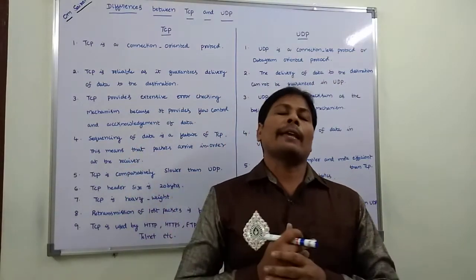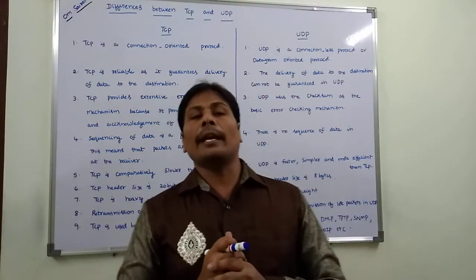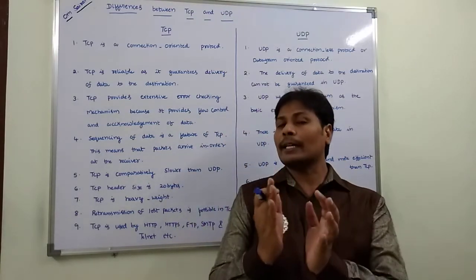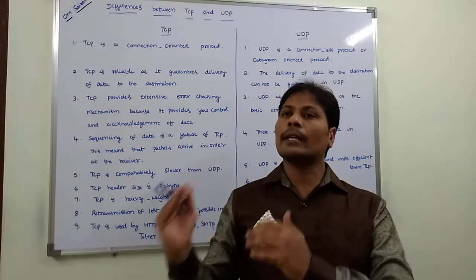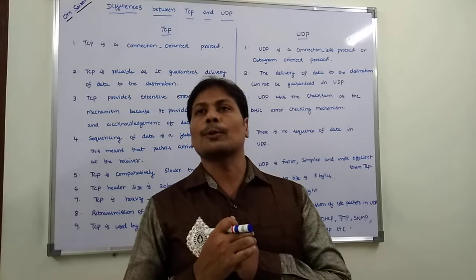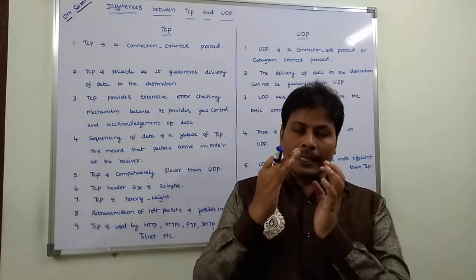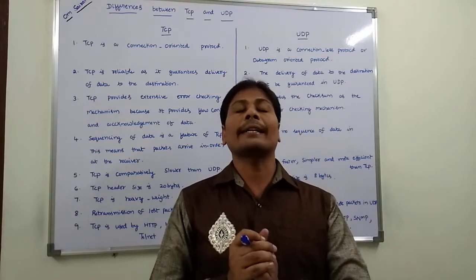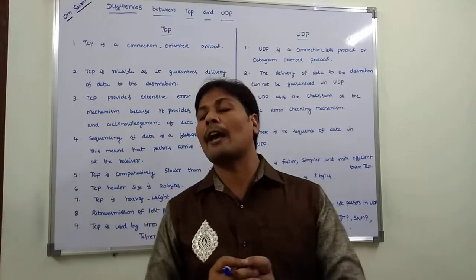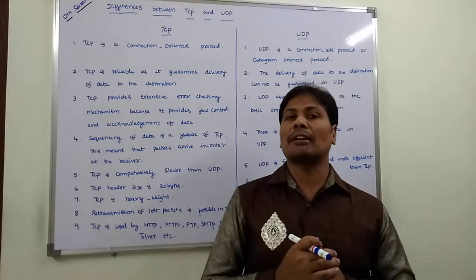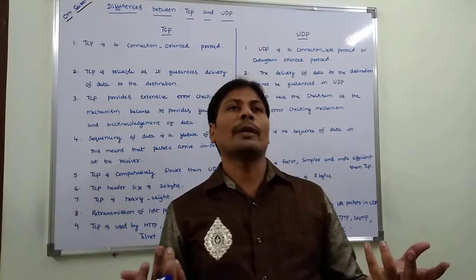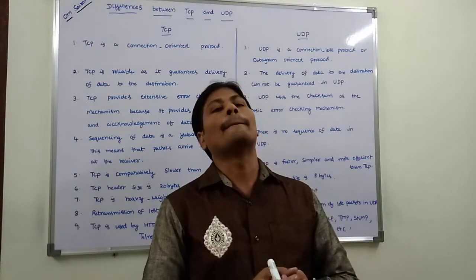The fourth point: sequence of data facility is available in TCP. Suppose I want to send 5 packets from sender to receiver — whatever order is followed at the sender, the same order is followed at the receiver. Each packet has a sequence number. At the receiver side, we follow the sequence number to determine which packet is received first and which is received next. But in the case of UDP, there is no sequence of data — packets are received in random order.